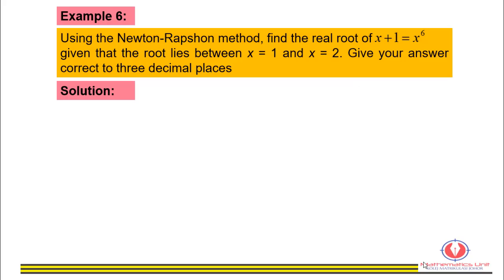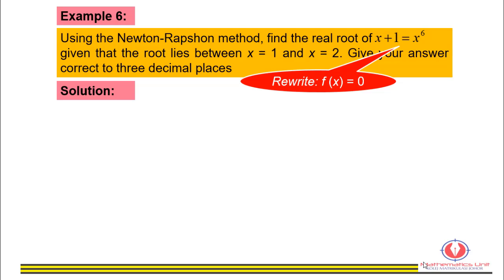Using the Newton-Raphson method, find the real root of x + 6 = x^6, given that the root lies between x = 1 and x = 2. Give your answer correct to three decimal places. To determine f(x), rewrite the equation so that it equals zero: f(x) = x^6 minus x minus 1.